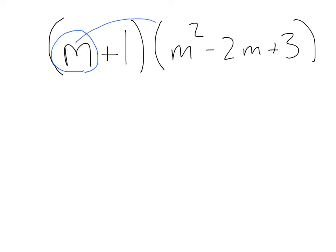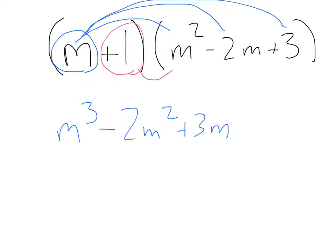Let's start with m. We'll have m times m squared, that's m cubed. m times negative 2m, that's negative 2m squared. And m times 3 would be plus 3m. Moving on to our second term, we have plus 1. 1 times m squared is plus m squared. 1 times negative 2m is negative 2m. And 1 times 3 is just plus 3.